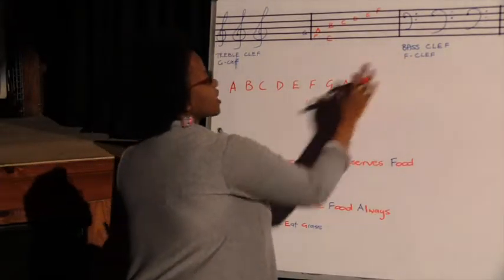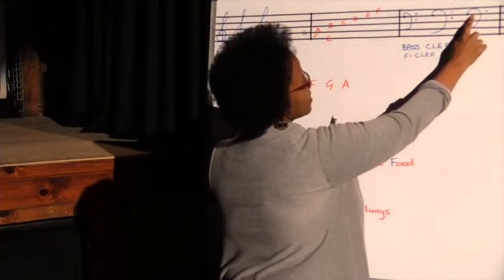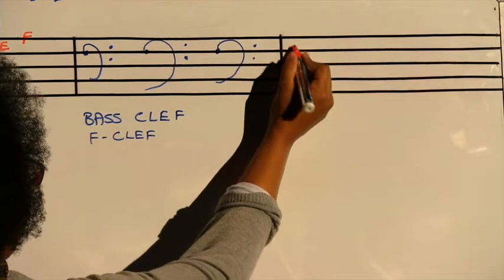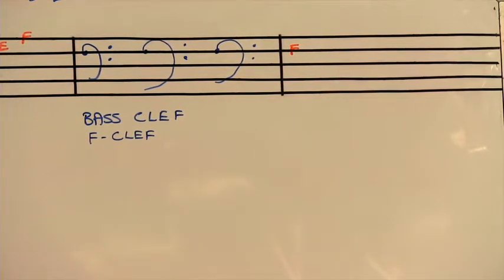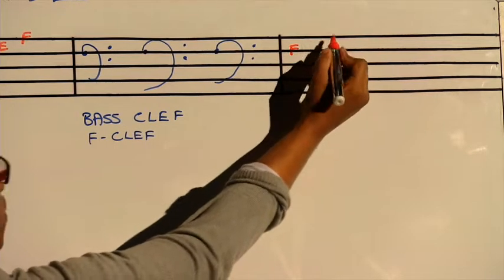Now looking at our bass clef, as I said that line, the second line from the top, is called a F. Now if we look at our letter names when we are going up, then from F it's going to be G in the space, then A on the line.